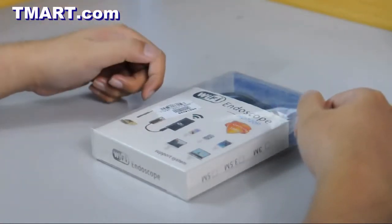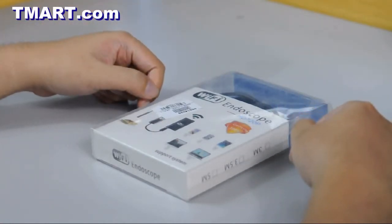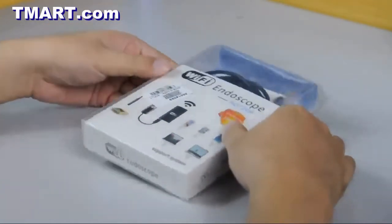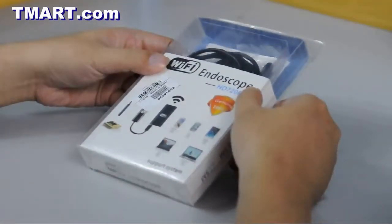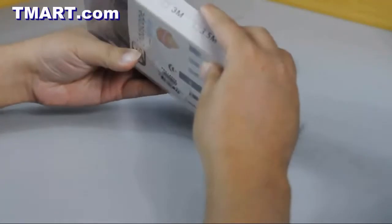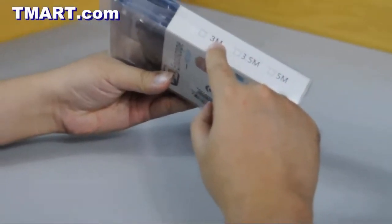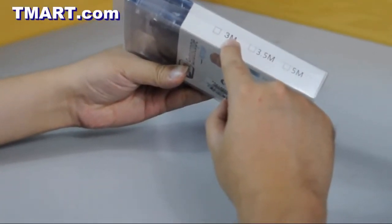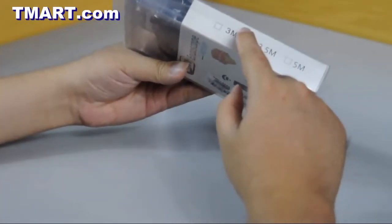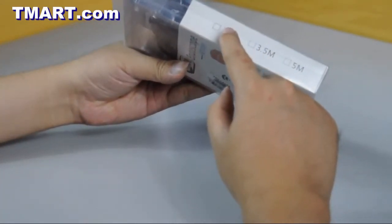So let's have a quick look around the box. As you can see on the front it's called Wi-Fi endoscope. On the side you can see different cable lengths you can buy. Now of course the longer cables will cost a bit more.